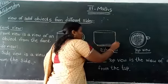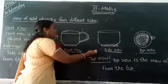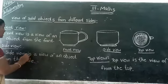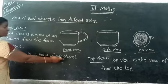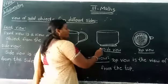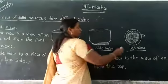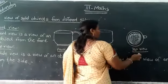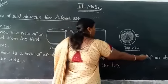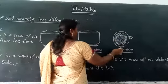Side view means the view of an object from the side. This is the side view of the curve. And one more view is there — that is top view. Top view is the view of an object from the top. This is the top view of the curve.